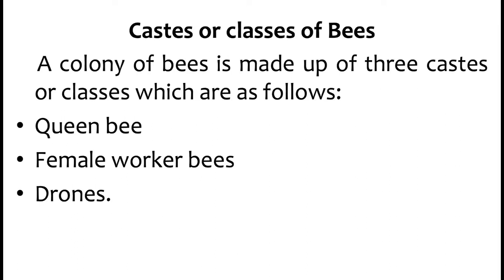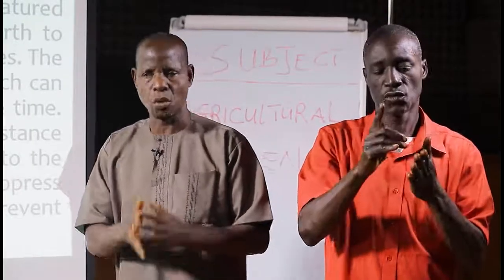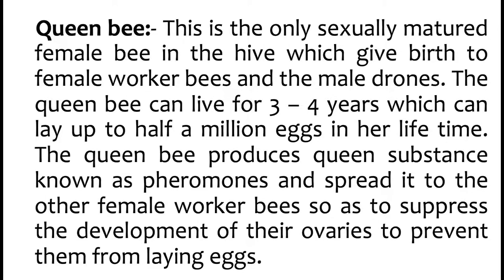The queen bee is the only sexually mature female bee in the hive, which gives birth to female worker bees and the male drones. The queen bee can live for three to four years and can lay up to half a million eggs in her lifetime. The queen bee produces a substance known as pheromones and spreads it to the other female worker bees so as to suppress the development of their ovaries, to prevent them from laying eggs.